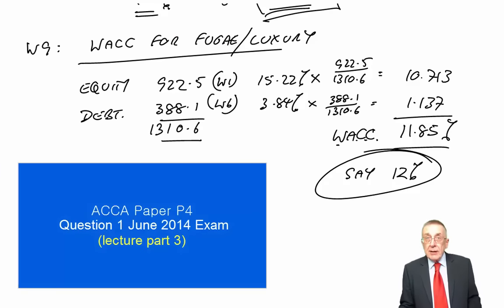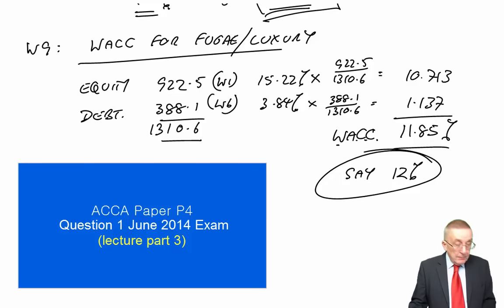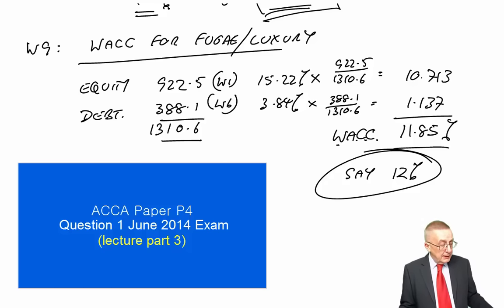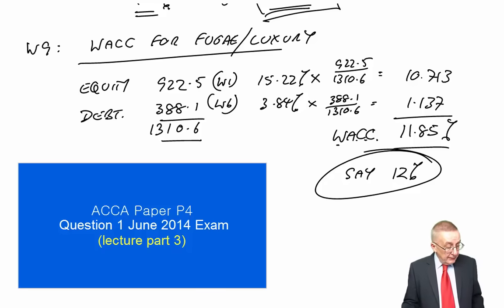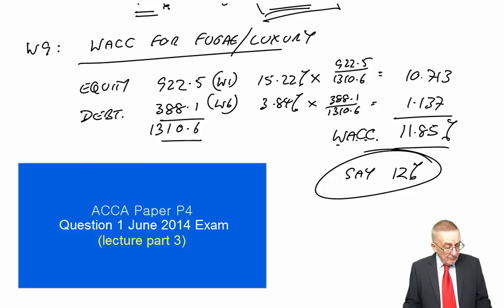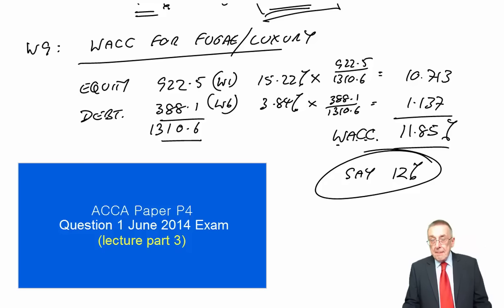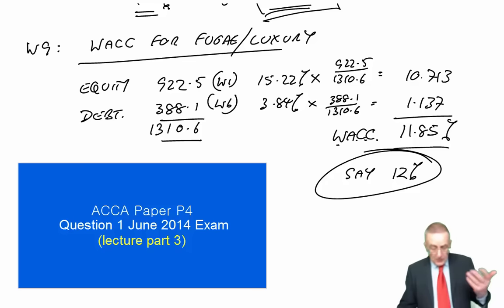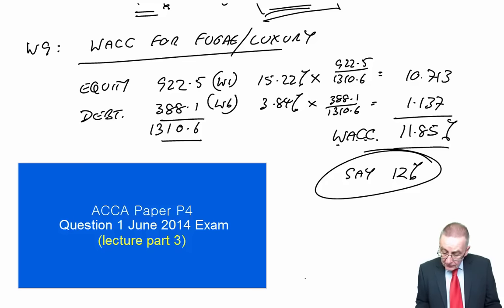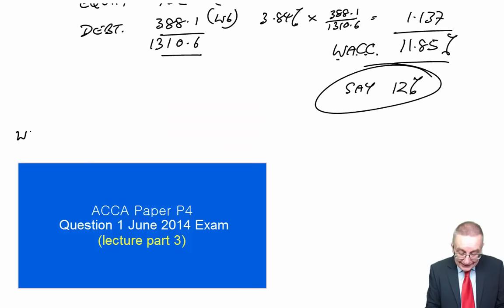Now we've got the discount rate of 12%. We can turn to the project and actually start evaluating it, start discounting. So let's go back and look at the project. Towards the end of the first page, the initial cost of the project is expected to be 42 million and is expected to generate the following after-tax flows over its four-year life. The above figures are based on the tourism industry expanding as expected. Let's make a start. First of all, we're on Workings 10. Let's suppose it does expand as expected.